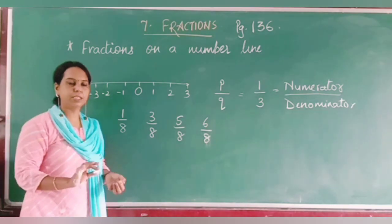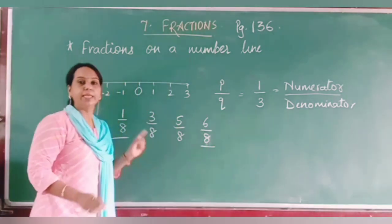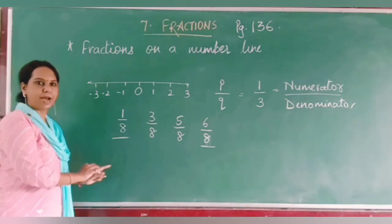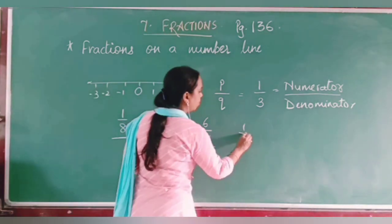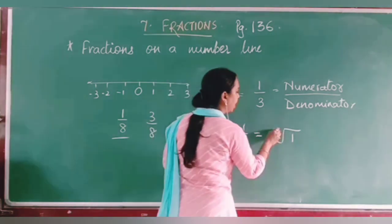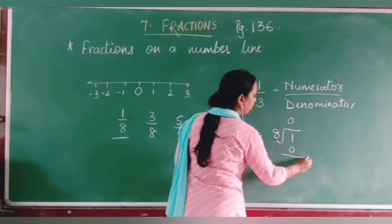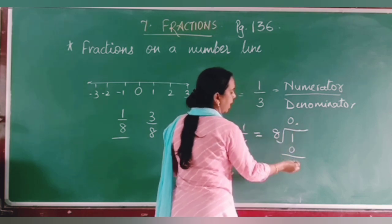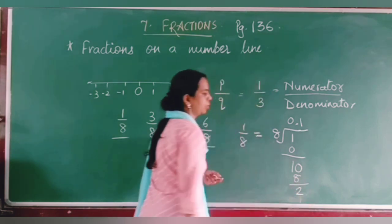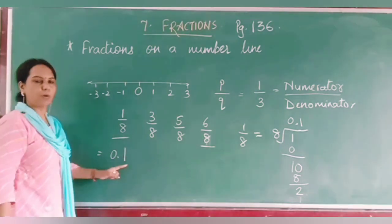First, you will find out between which two whole numbers these fractions lie. For that, we will do division. For 1 by 8, 1 is the dividend and we divide by 8. 8 zeros are 0; bring down 1, put a decimal and add a zero — 8 ones are 8, remainder 2. So 1 upon 8 equals 0.1 in decimal.